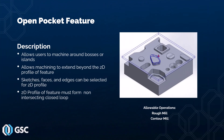The next two-and-a-half axis feature is the open pocket feature. This feature allows a user to machine an open area while avoiding some sort of boss or island in the middle of the feature. With the open pocket feature, the tool can machine beyond the boundary — you machine everything within that boundary while avoiding the center boss area. Sketches, faces, and edges can be selected for the 2D profile, and the 2D profile must form a non-intersecting closed loop. The allowable operations are rough mill and contour mill.